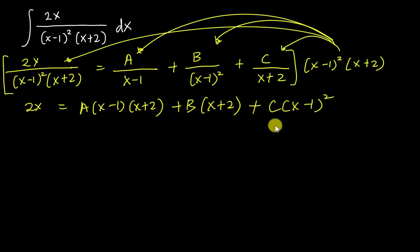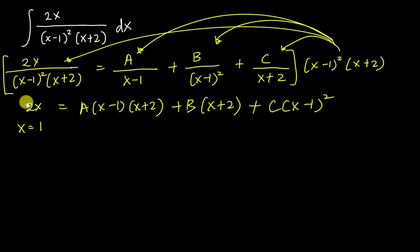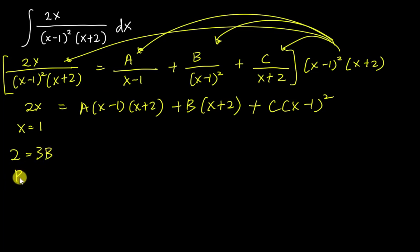I insert values of x to make terms vanish. Let x = 1: the left side gives 2(1) = 2. The A term becomes zero, the C term becomes zero, and the B term gives (1+2) = 3, so 2 = 3B, which means B = 2/3.